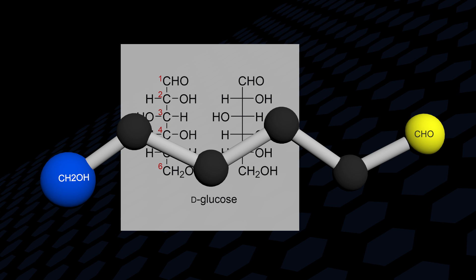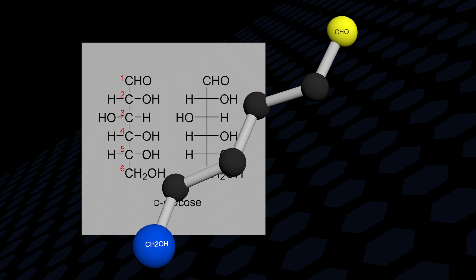An alternative method for converting the Fischer projection to a skeletal or line structure begins by lining up a zigzag structure with the Fischer projection.